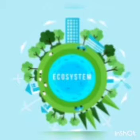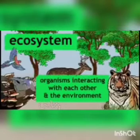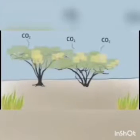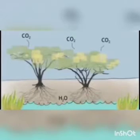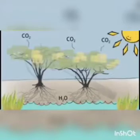Now let's talk about ecosystem. Do you know what makes the ecosystem? It is a system formed by the interaction of all living organisms with each other and with the physical and chemical factors of the environment. Let us know more about ecosystem with the help of a story.